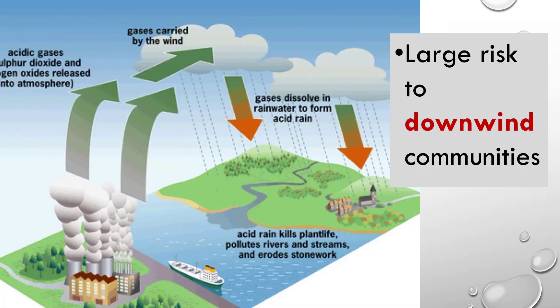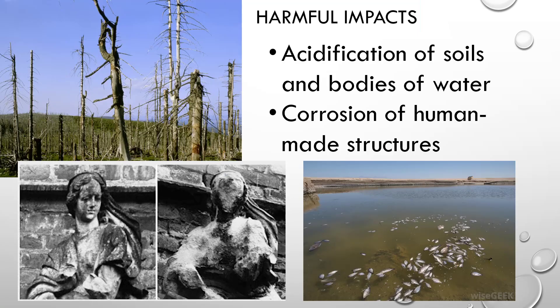When it comes to acid deposition, the biggest risk comes to downwind communities. In the United States, with prevailing winds from west to east, the east is at more risk. Acidic gases like sulfur dioxide and nitrogen oxides are released into the atmosphere, carried by wind, and combine with water to form acid rain as it falls. Acid rain can kill plant life, pollute rivers and streams, and erode stonework. Harmful impacts include acidification of soils and bodies of water, corrosion of human-made structures, death of plant life from acidic soil, and fish dying off from highly acidic water.